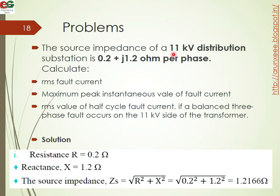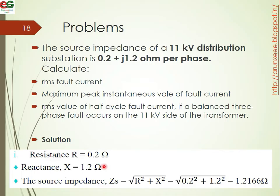Example: The short circuit impedance of an 11 kV distribution substation is 0.2 + j1.2 ohm per phase. Calculate the RMS fault current, maximum peak instantaneous value of fault current, and RMS value of the half cycle fault current for a balanced three-phase fault on the 11 kV side. Here R = 0.2 ohm, X = 1.2 ohm, and the source impedance Zs = √(0.2² + 1.2²) = 1.2166 ohm.